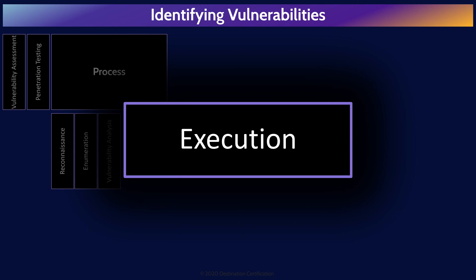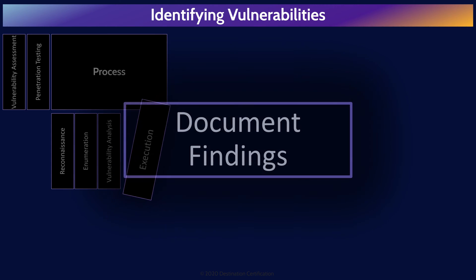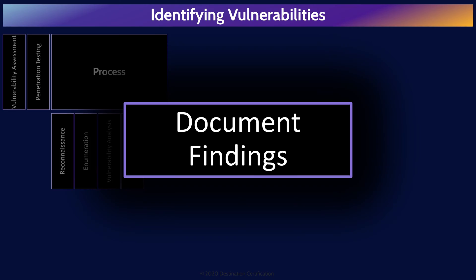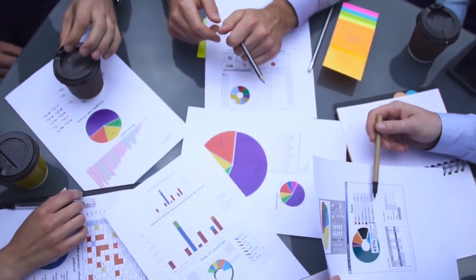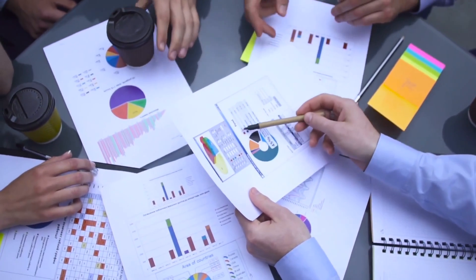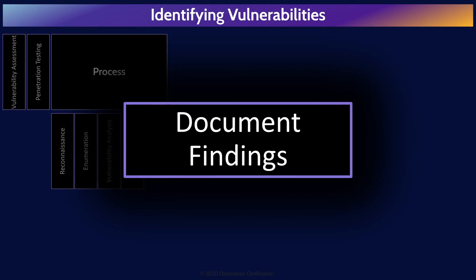If we're performing a vulnerability assessment, then we skip execution and go straight to reporting. In a pen test, however, the execution step is where we attempt to exploit any vulnerabilities we have identified — actually break into a system. Documenting findings is all about reporting on vulnerabilities identified, the potential impact to the organization, how they should be prioritized, and all of these sorts of things. An important part of reporting is also about tailoring reports to various audiences.